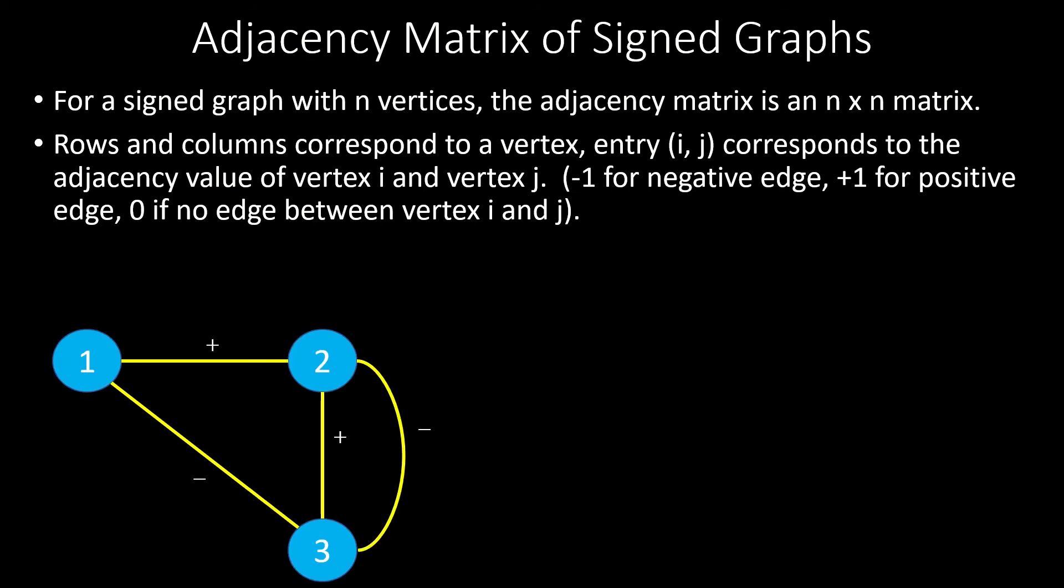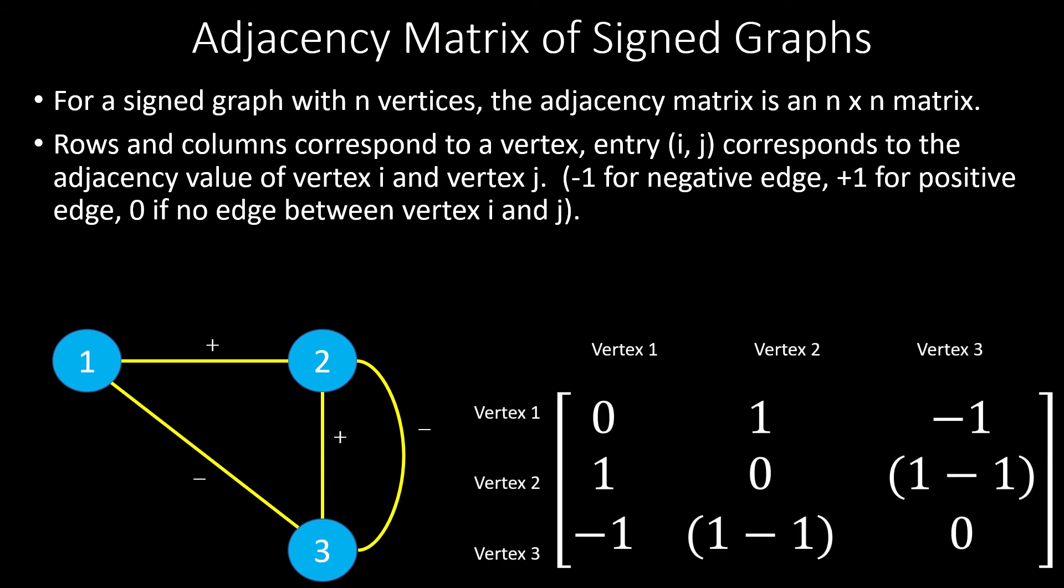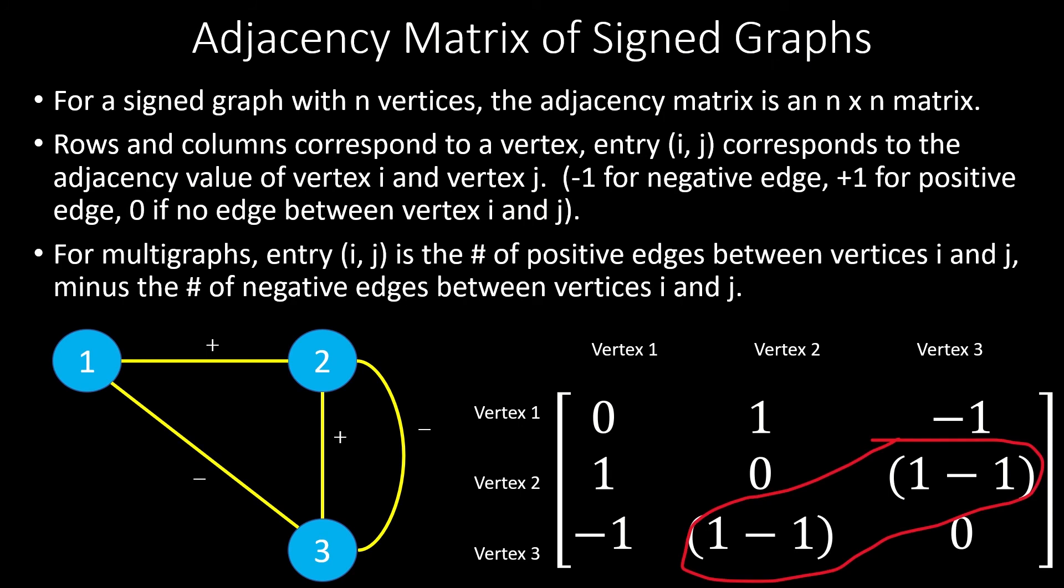If our graph happens to be a multi-graph with multiple edges between some pair of vertices i and j, the corresponding entry in the adjacency matrix is the number of positive edges between vertices i and j minus the number of negative edges between i and j.